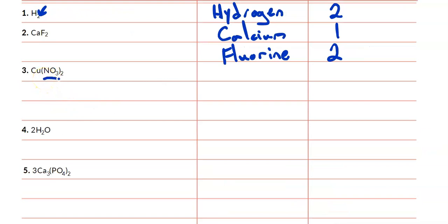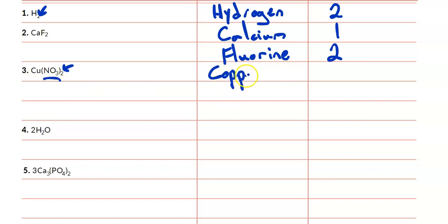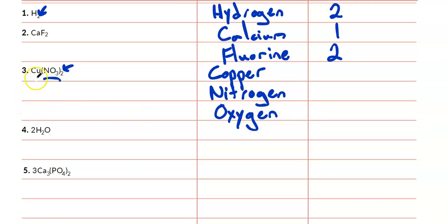Moving down here, we have a polyatomic ion, and we put it in brackets. So this subscript represents how many of those polyatomic ions we have. Just like math, we're going to multiply that two into every element in the brackets. So we have three elements here: copper, nitrogen, and oxygen. Copper is outside the bracket and has no number, so it's just one. The nitrogen in the bracket has only one, but we multiply it by the two outside of the bracket — so two times one is two. And the oxygen, we have three, and we multiply it by that two outside of the bracket, so we have six oxygen.